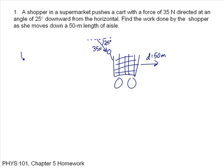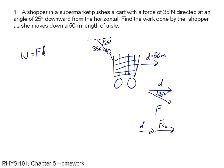The work is equal to force times the displacement — specifically, the component of the force that is in the same direction as the displacement. So this is my displacement, this is my force, this angle is 25 degrees, and the component of this force — that is, the x-component — is F times cosine of 25 degrees.